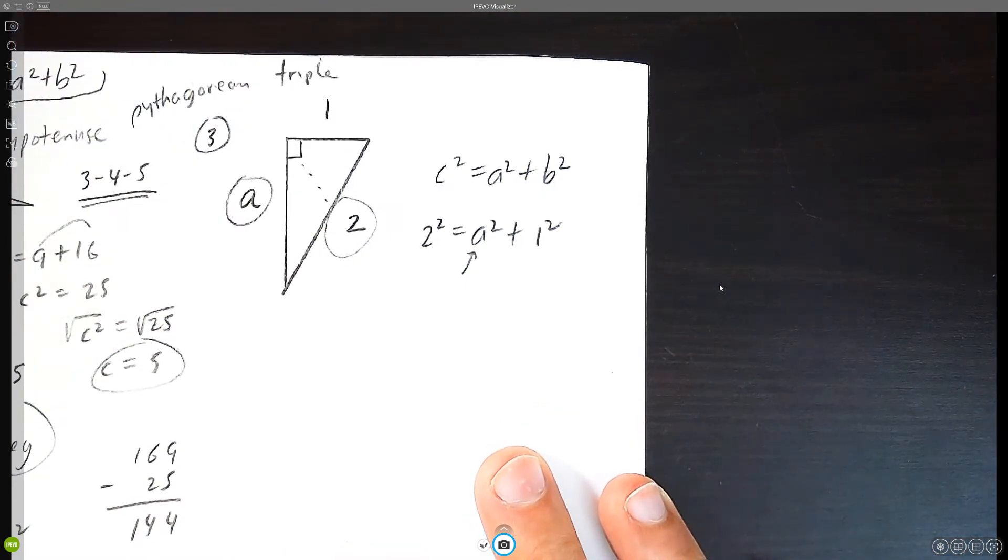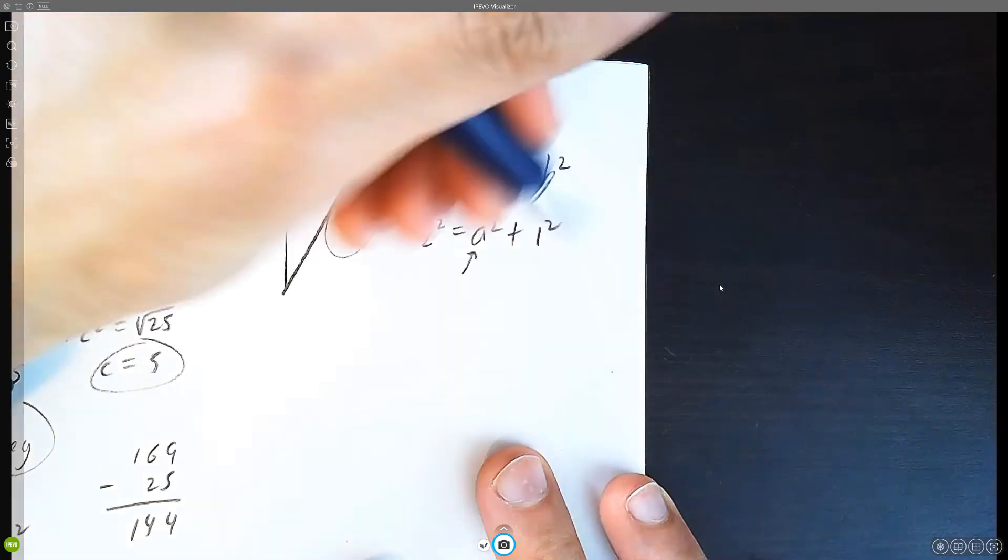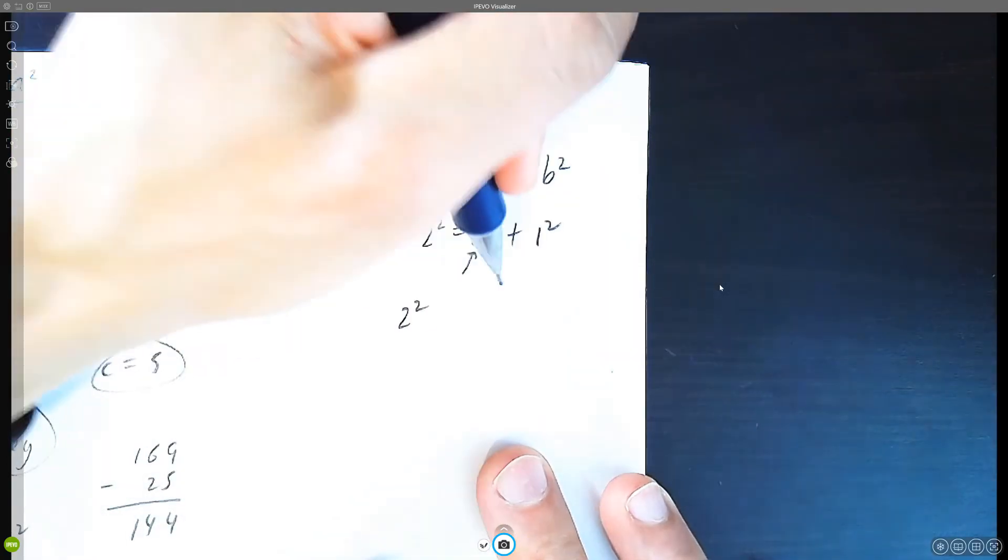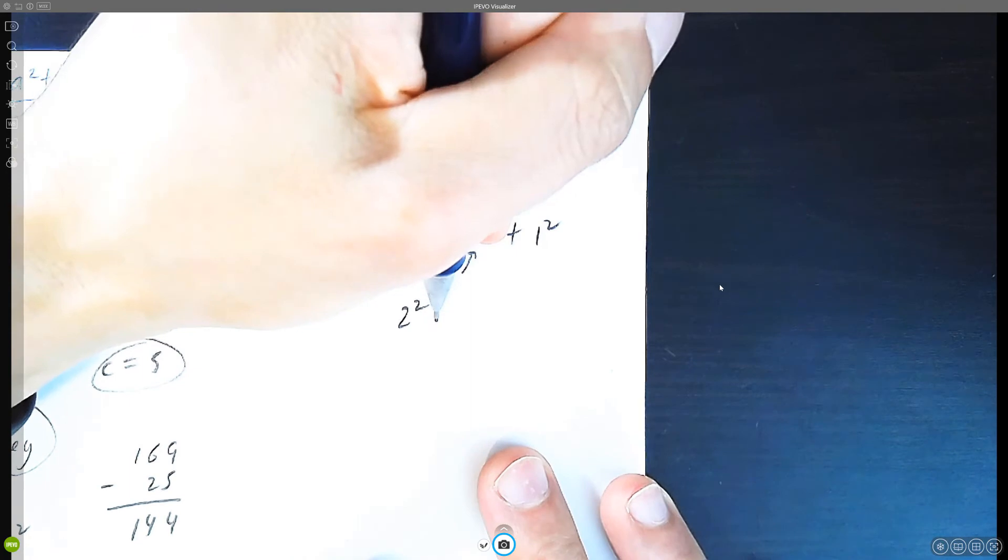It doesn't really matter what variable letter this is. It could be a, b, c, p, q, r, x, y, z. It's fine. So we're going to subtract both sides by one squared.